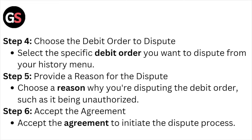Step number five, provide a reason for the dispute. Choose a reason why you are disputing the debit order, such as it being unauthorized. Step number six, accept the agreement to initiate the dispute process.